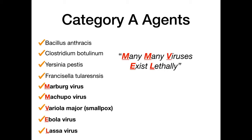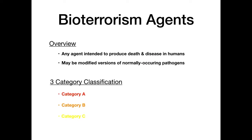That wraps up all category A agents. The five you probably never heard of are summarized by the mnemonic 'Many many viruses exist lethally': Marburg, Machupo, Variola, Ebola, and Lassa. You now know them all.